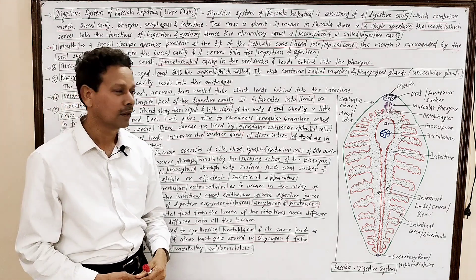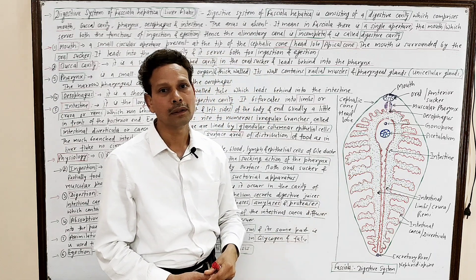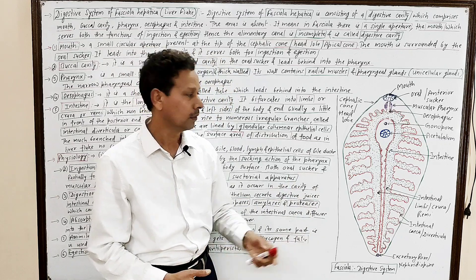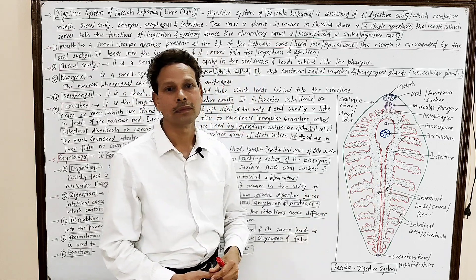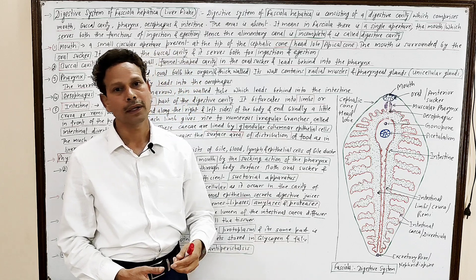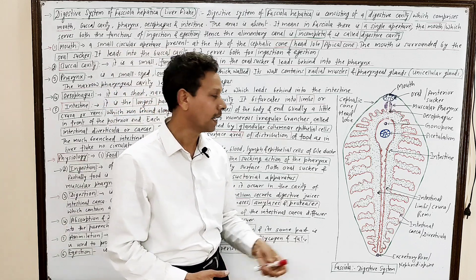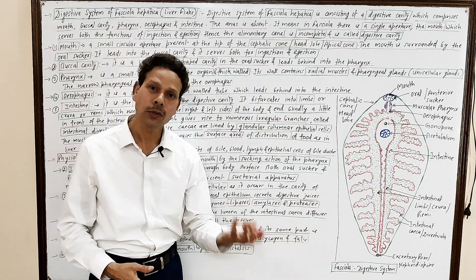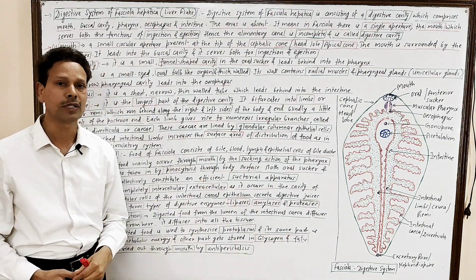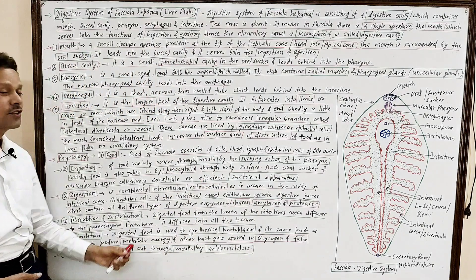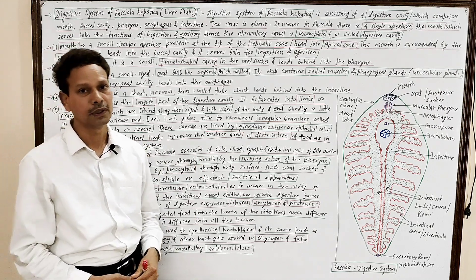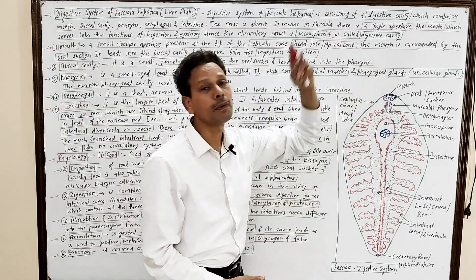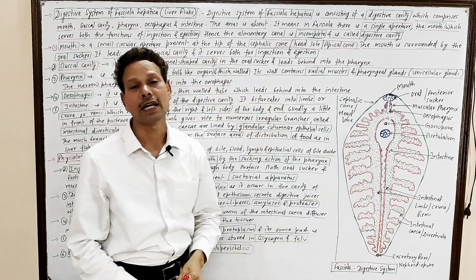Assimilation: The digested food after absorption is involved in the synthesis of protoplasm, some food is used for metabolic energy, and some food gets stored in the form of fats and glycogen. Egestion: The undigested food is expelled through the mouth by antiperistalsis.